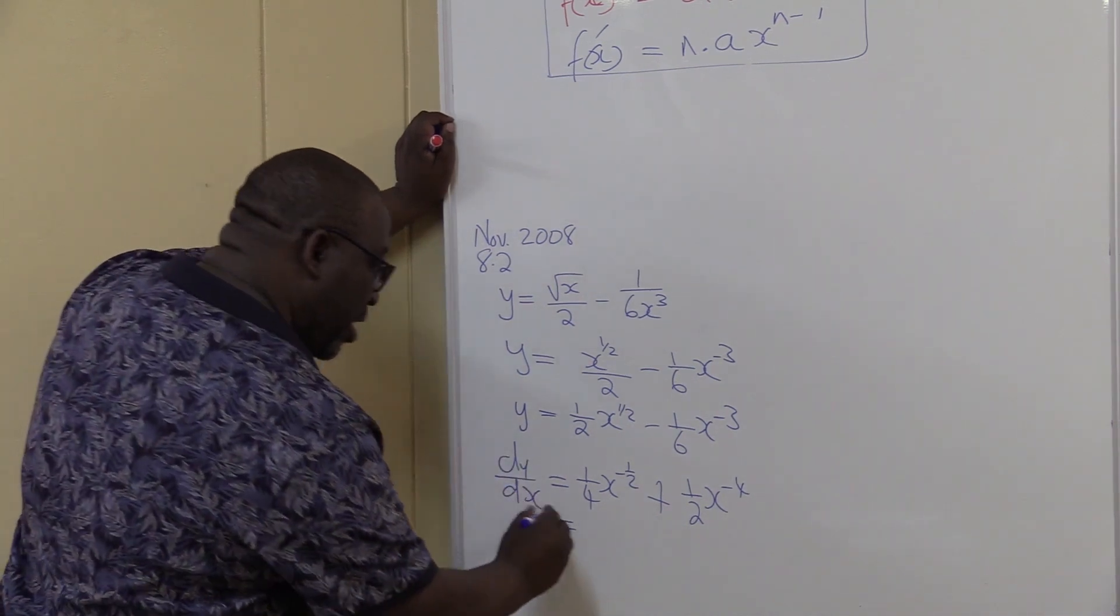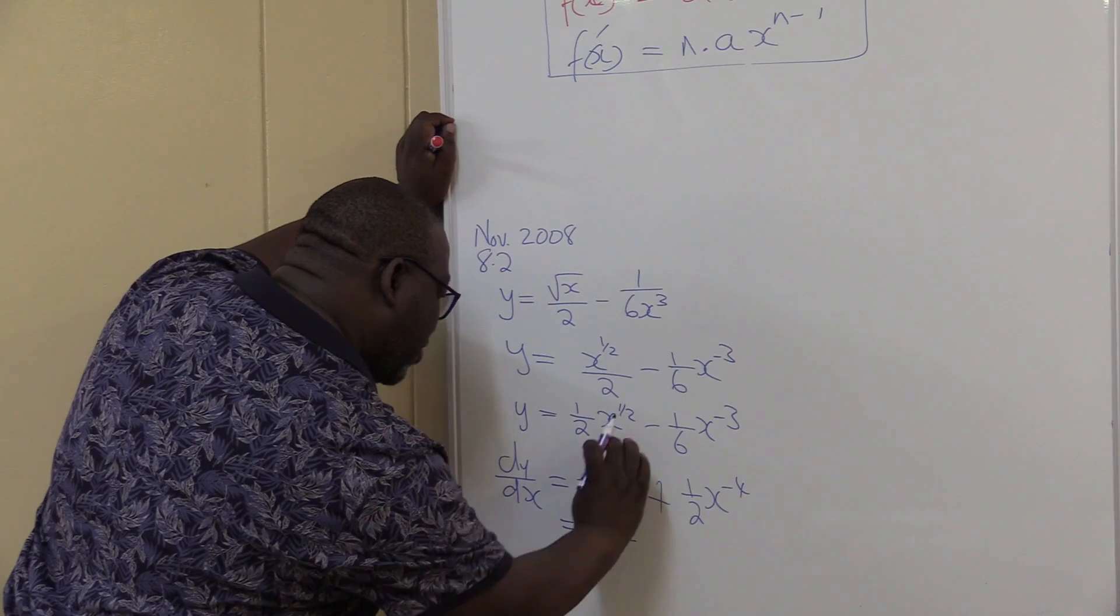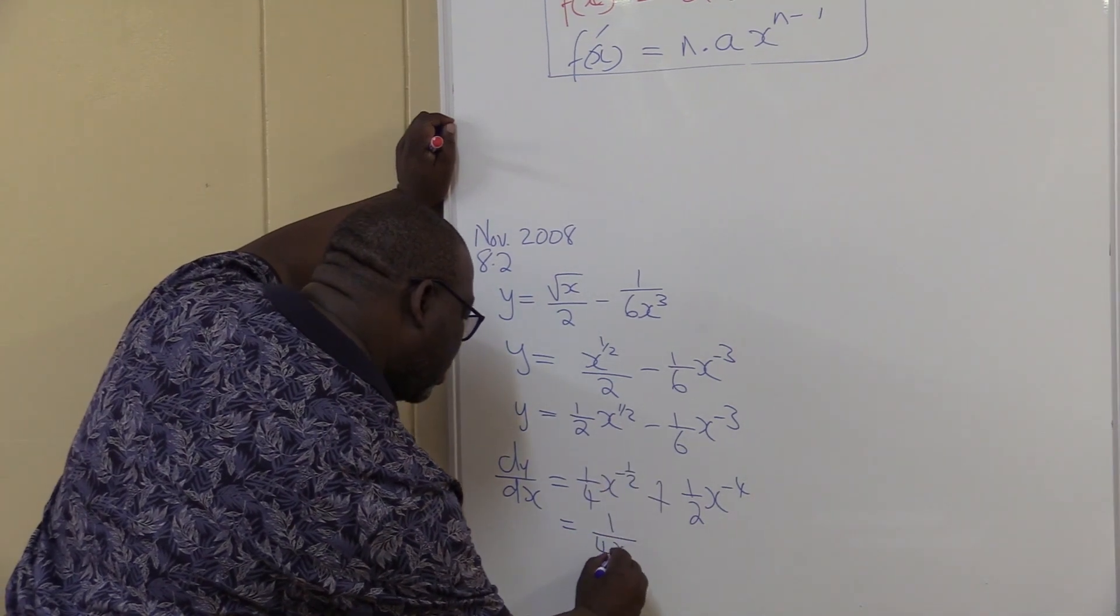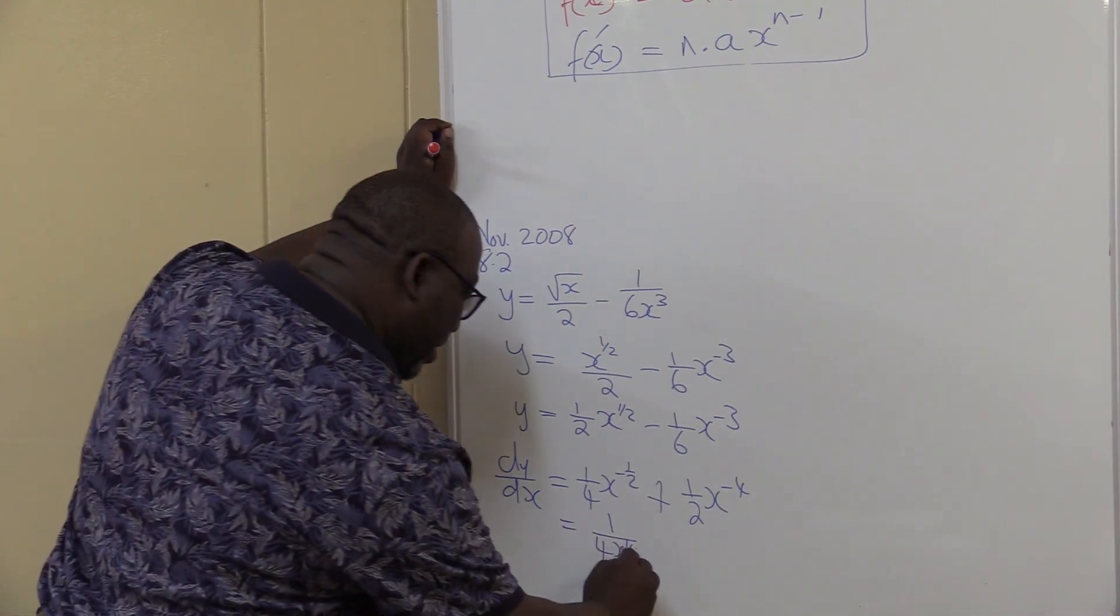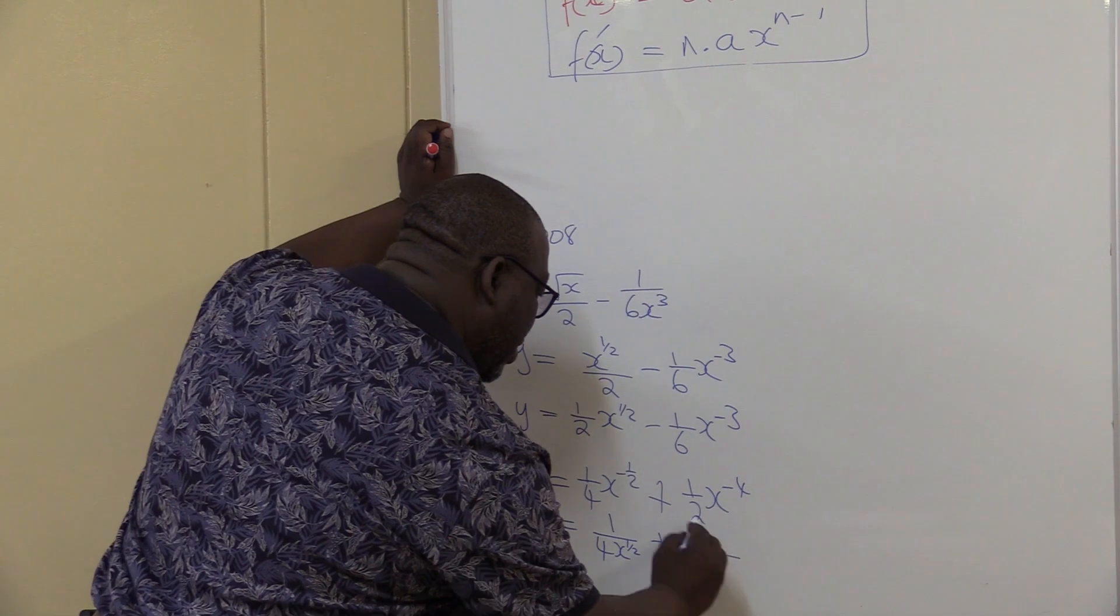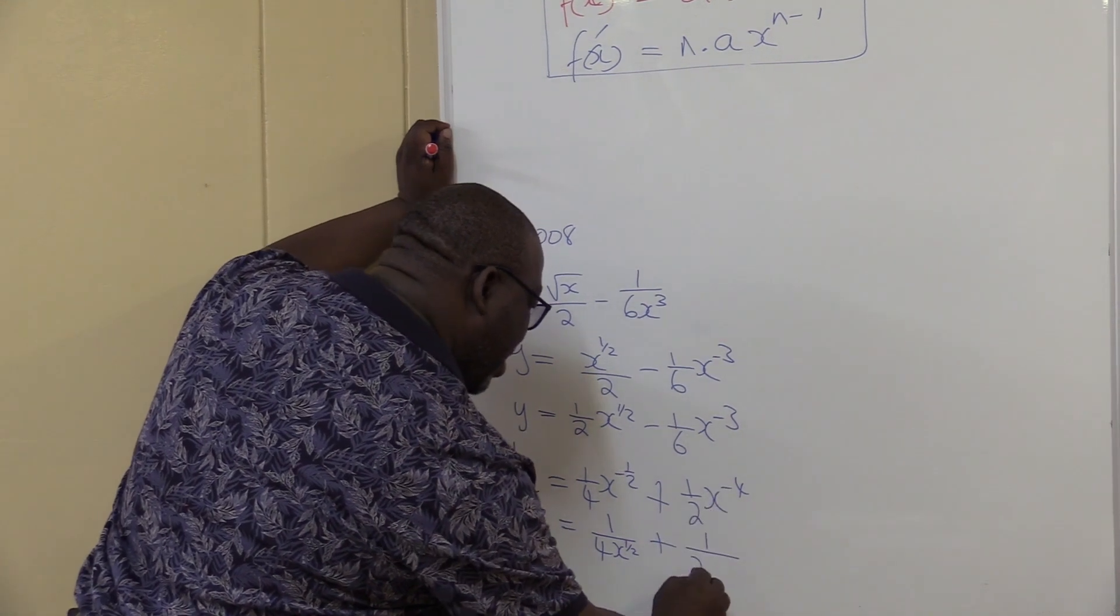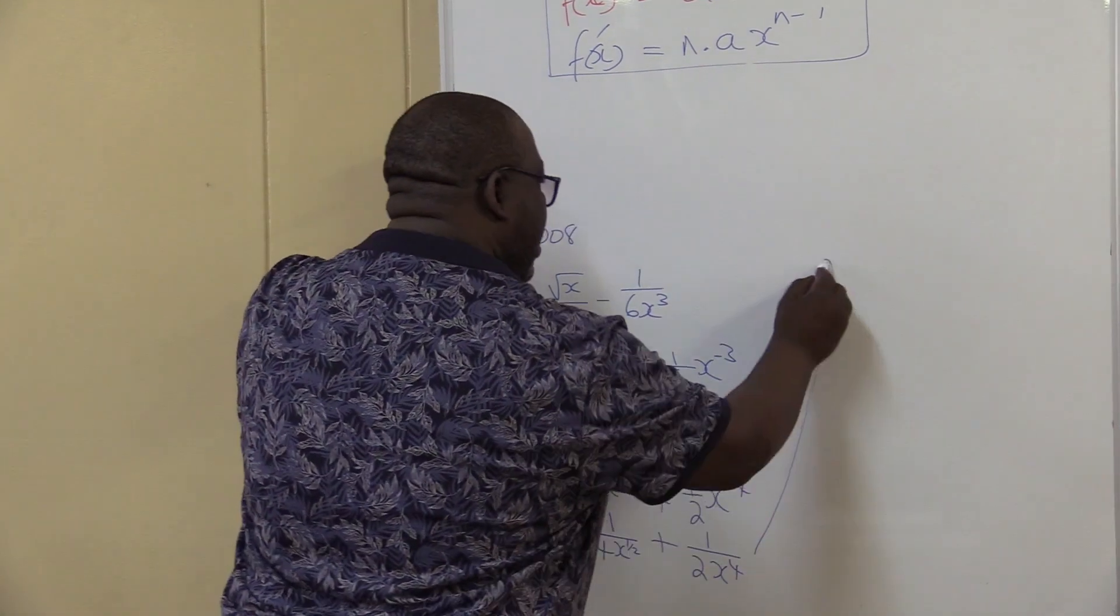Now it is positive. Plus, I do the same thing. I've got 1 on top, there's 2 here. If I take this down it will be x to the power 4.